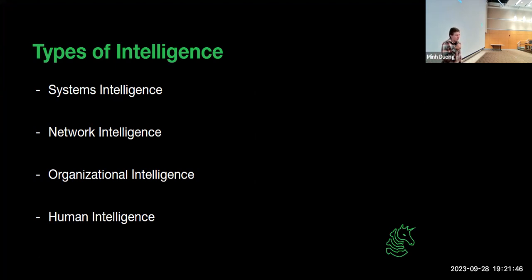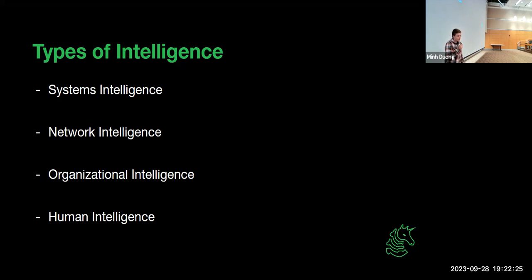That video was about human intelligence — getting information on a specific person in order to social engineer phone desk workers into changing things, like giving you their hotel points or airline points. Other than human intelligence, there are a few different types of information you can learn through OSINT: systems intelligence, network intelligence, and organizational intelligence. Most CTF challenges will focus on human intelligence because social media challenges are really easy to write, but in the real world all of these areas are very important for cyber attackers.